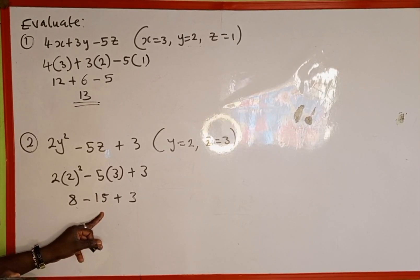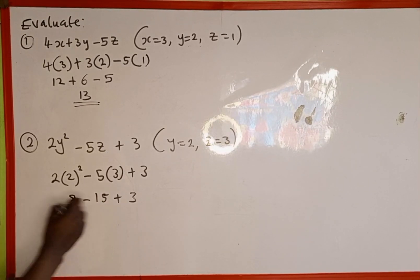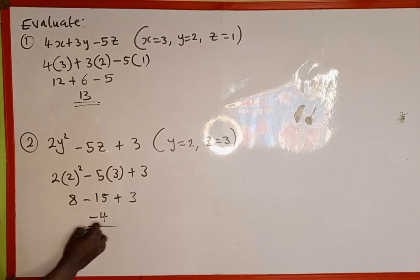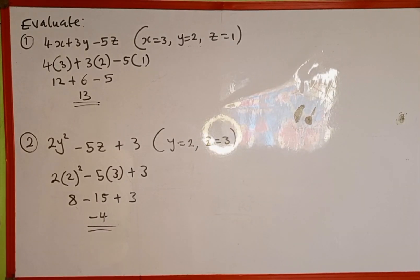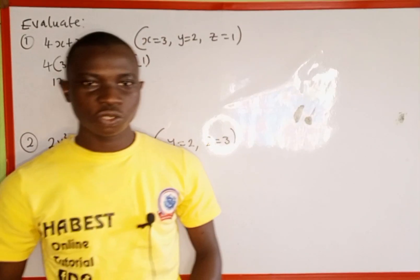Now 8 - 15 = -7, and -7 + 3 = -4. So this is how to evaluate algebraic expressions. Thank you for watching and please follow and subscribe for more videos like this.